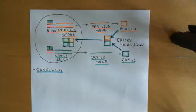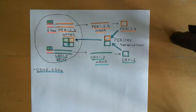Welcome back to this next video in which we are discussing circadian clocks. We're in the process of discussing mammalian circadian clocks, and we've discussed that the main one — the one that is best understood — involves a transcriptional-translational feedback loop, and is very analogous to that transcriptional-translational feedback loop that we saw was present in Drosophila cells.